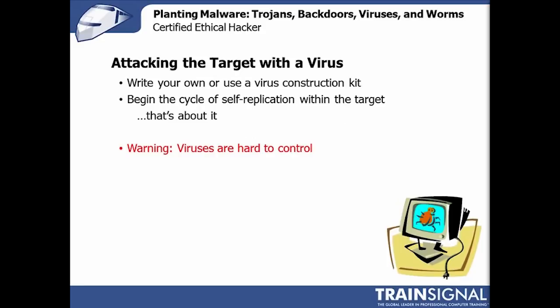Viruses are specifically designed to install, self-replicate, and destroy things. In an ethical hack, you typically use a virus construction kit to form a brand new virus based on a compromise or vulnerability you've footprinted in the target. For example, if the target environment uses Adobe Reader on every client and you find a vulnerability, you may download sample code or craft your own code to attack Adobe Reader, then package it with a virus construction kit — primarily for the self-replication and hiding aspects, not for the attack or destruction code itself.